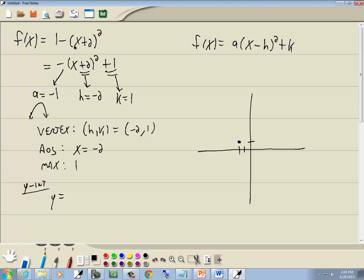So we've got 1 minus (0+2) squared. Well, 2 squared is 4. And that gives us 1 minus 4, which is negative 3.